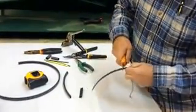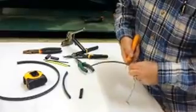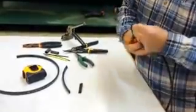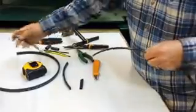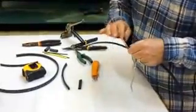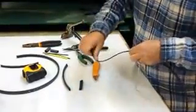One inch up from the ground braid, we want to make a slight score on the jacket for the inner covering here, the inner core. So we just slightly cut through it, flex it back and forth, and we're able to pull it off.